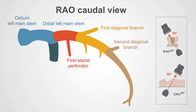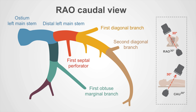In terms of branches from the circumflex vessel, the first major branch is the first obtuse marginal branch. There can be any number of marginal branches off the circumflex vessel — ordinarily there are at least two, and here you can see the second obtuse marginal branch being outlined.